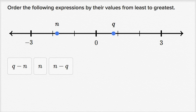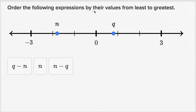Let's get some practice understanding variables and the negative or positive numbers that they might represent. We're told to order the following expressions by their values from least to greatest. They've given us three expressions: q minus n, n, and n minus q, and they plot n and q on the number line.